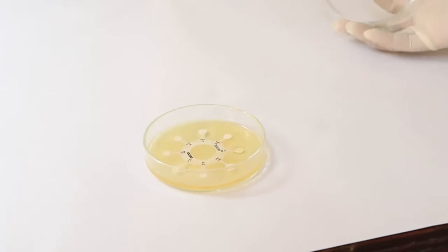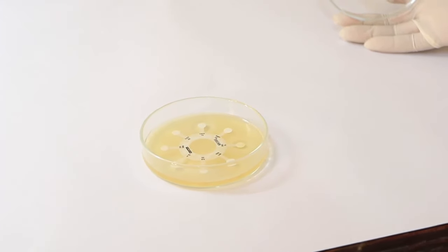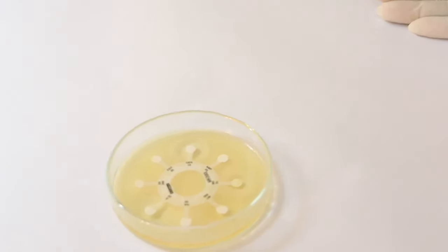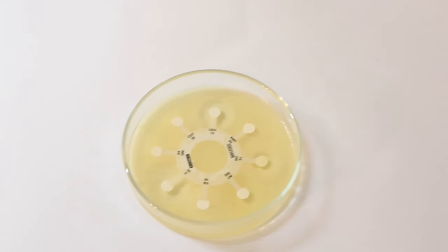After the bacteria have grown, you can see a clearing around antibiotic discs called the zones of inhibition. The bacteria are only susceptible to some kinds of antibiotics.